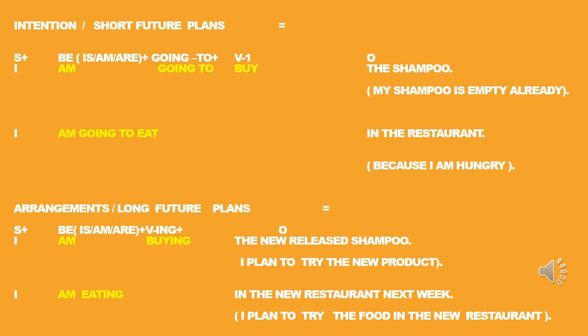For example: 'I'm buying the new Lily shampoo.' 'I' is the subject, 'am' is the be verb, 'buying' is the verb with -ing, and 'the new Lily shampoo' is the object. Because it's a new Lily — a new product — I just want to try it, even though I still have my shampoo. So I plan to buy this new product, but I may cancel it anytime I want. 'I'm eating in the new restaurant next week.' Not because I'm hungry, but because I want to try the new menu. So I plan to try the food in the new restaurant, and I can cancel it anytime I want.